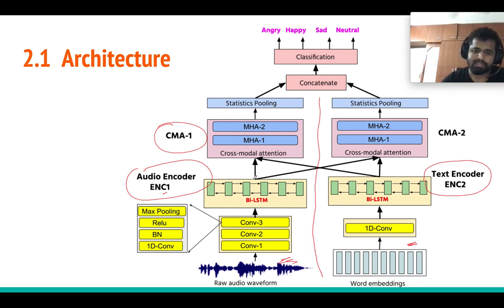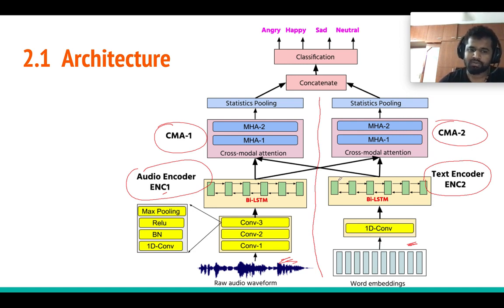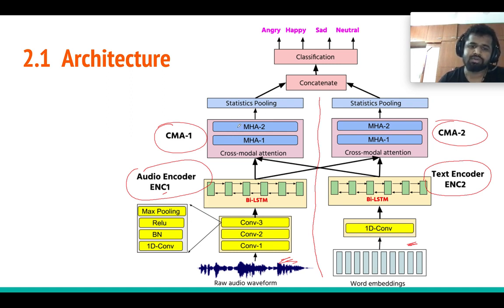The cross-modal attention is the main contribution of this paper. It takes both audio encoder features and text encoder features and uses this attention mechanism to learn cross-modal interactive information between the two modalities. Similarly, CMA2 takes text encoder features and audio encoder features and again learns interactive information between the two modalities. Once we have these attention-learned interactive representations, we pool them using a statistic pooling layer to get an utterance-level feature vector.